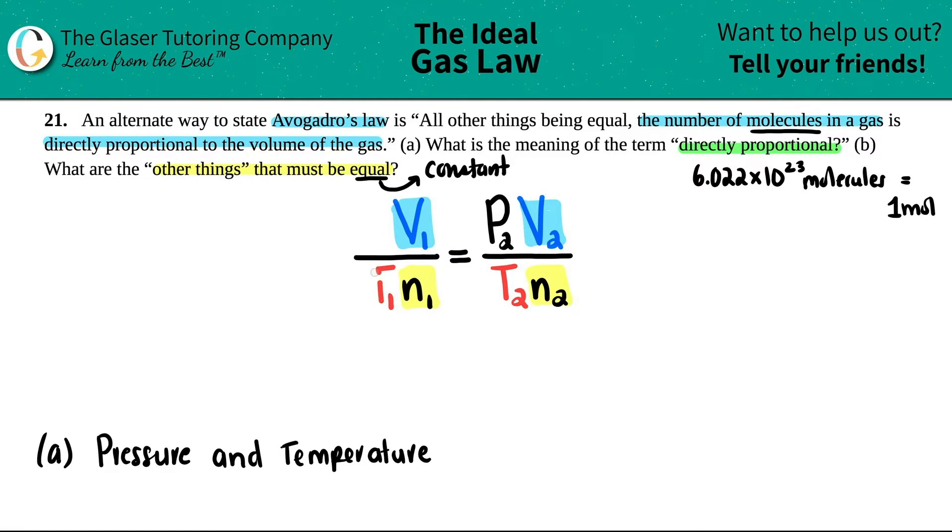Goodbye, pressure. Goodbye, temp. And now we have a nice formula here of V1 divided by N1 equals V2 divided by N2. And this is Avogadro's law.